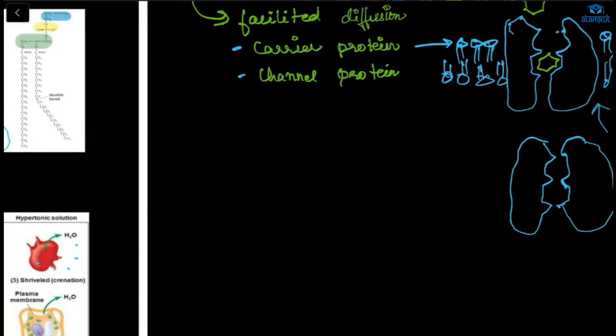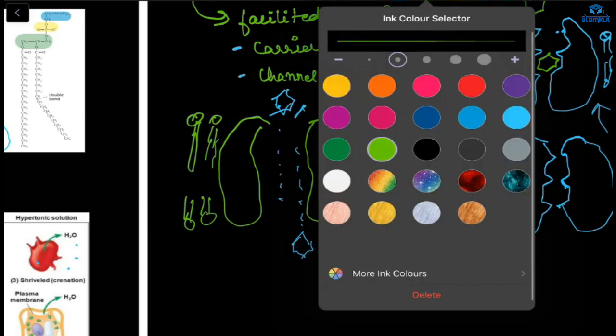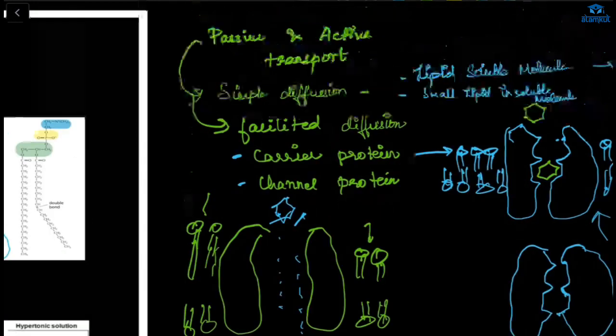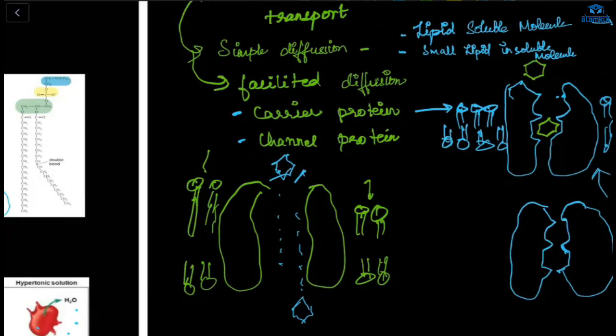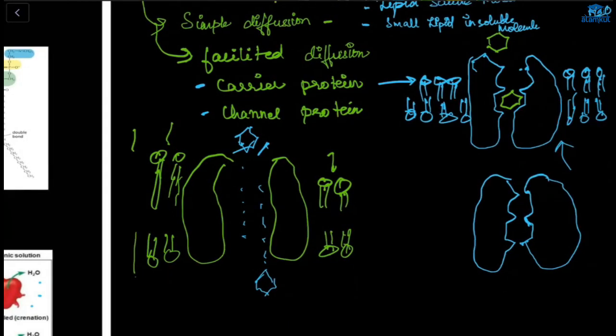And in channel protein, what happens? It will be like this. Only the selective molecules will get inside or get out. These molecules can pass through here. In simple diffusion, molecules can pass through the membrane. But the molecules that cannot pass through require carrier protein or channel protein.